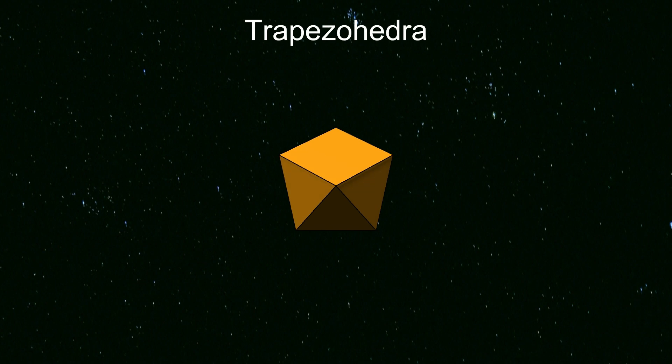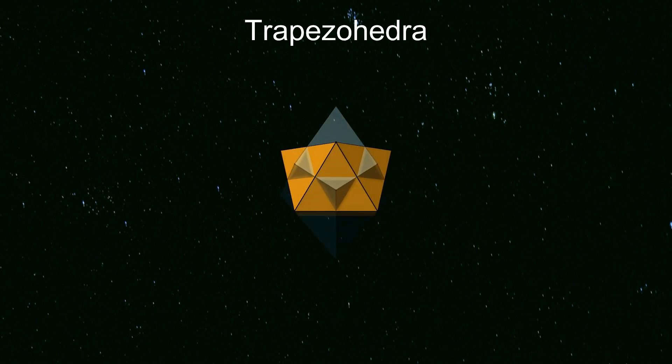The dual of an antiprism is called a trapezohedron. This is a shape that might not be so familiar.